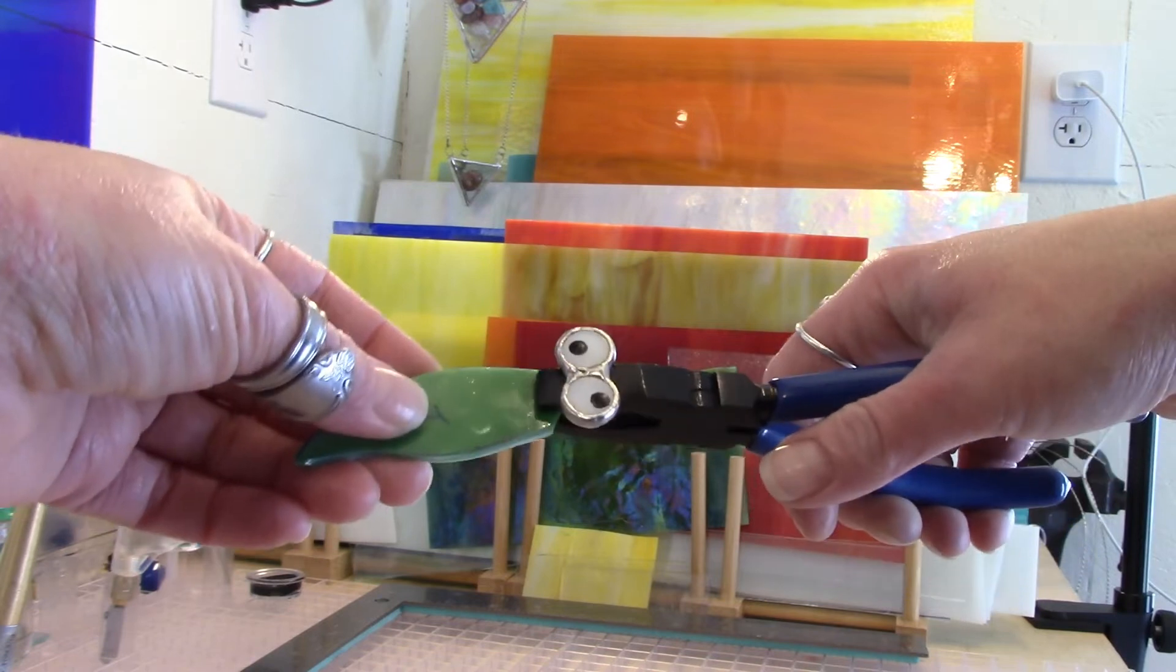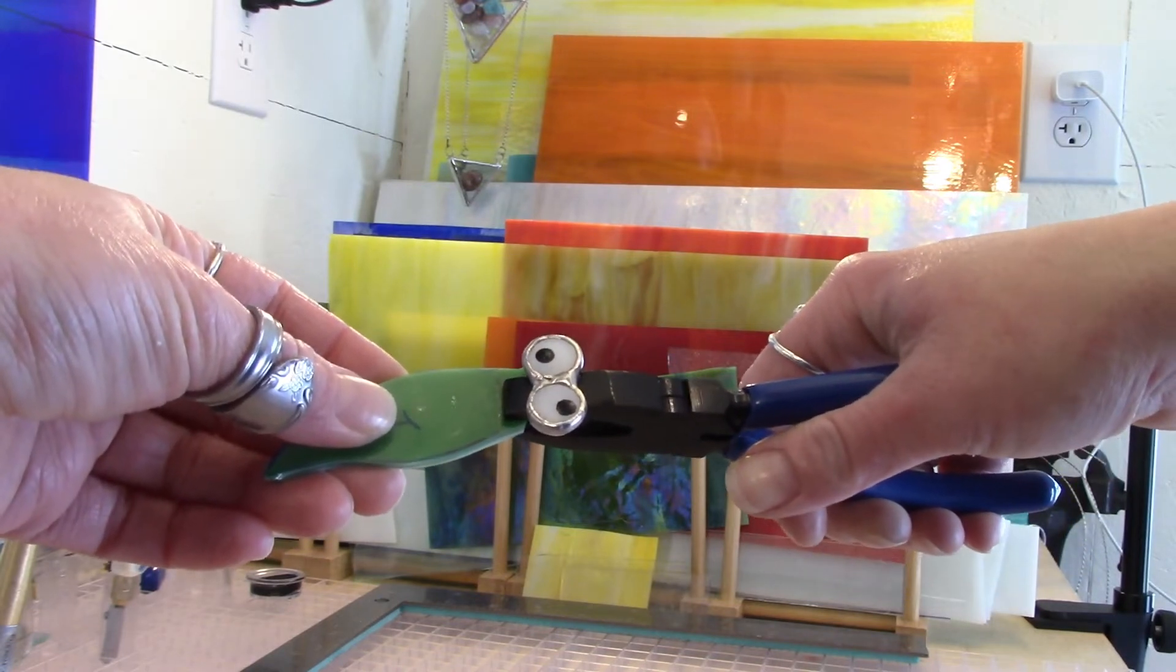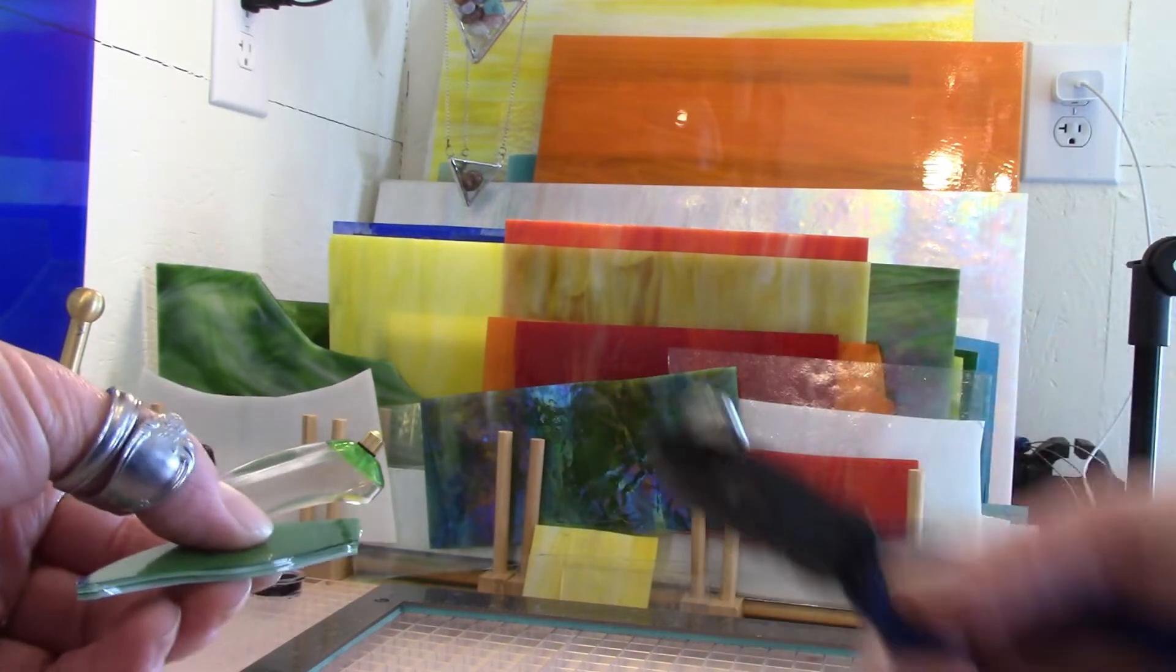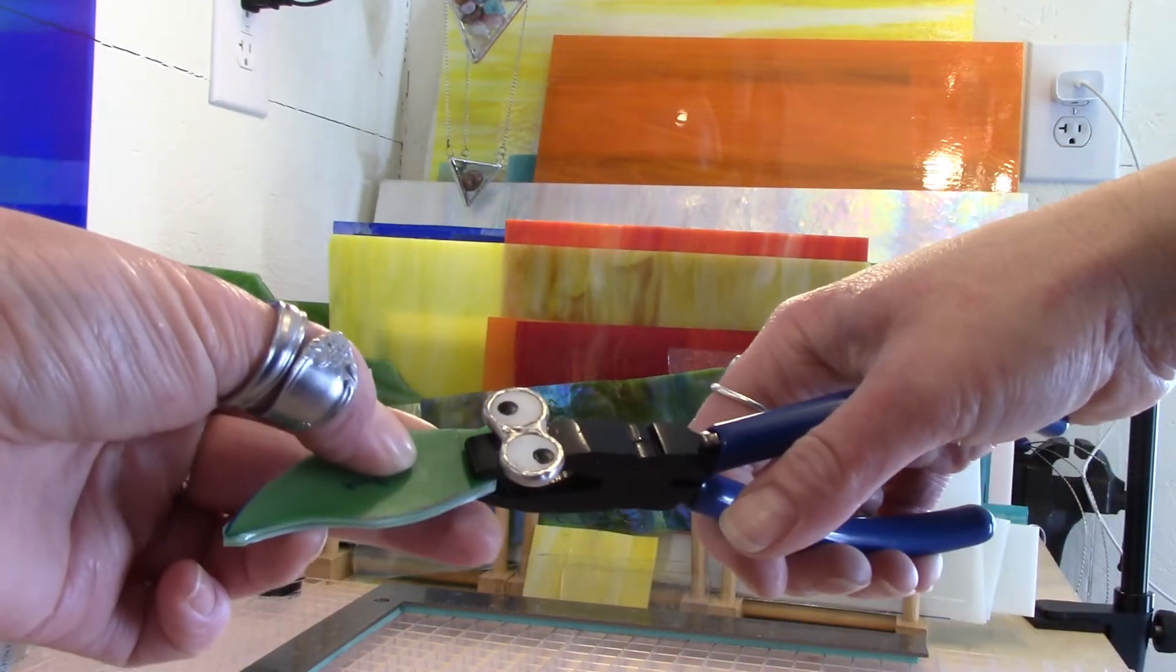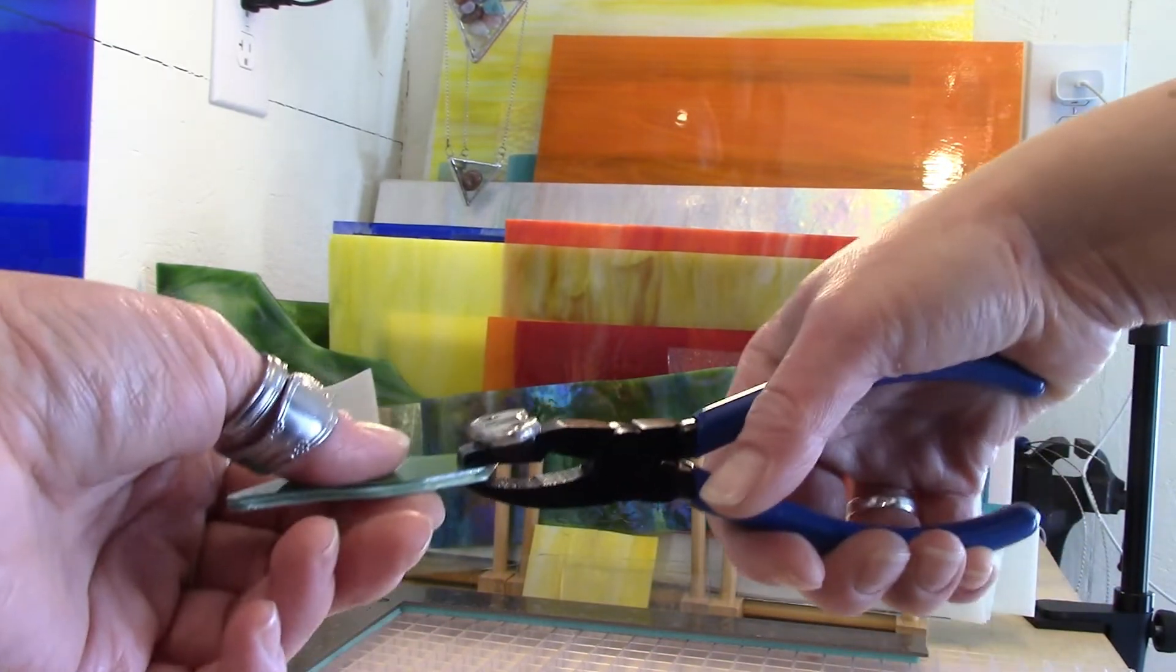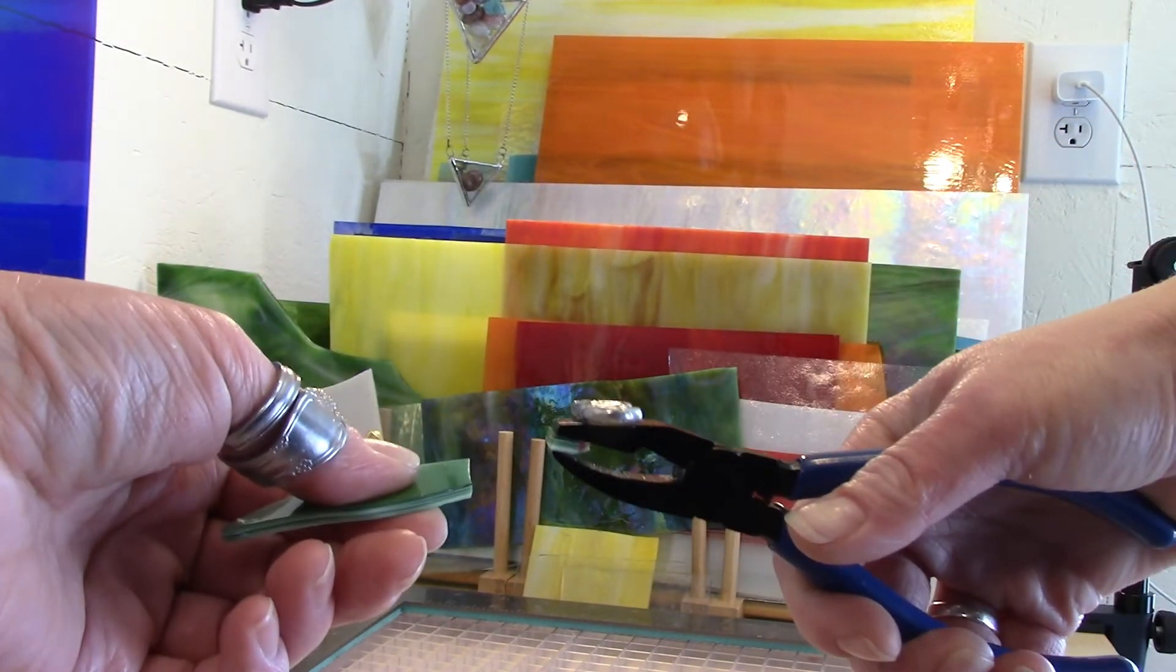Here we go with the side view. Remember thumb on top, outside of the score line and a down and out motion. And thumb on top. Boom. Off we go.